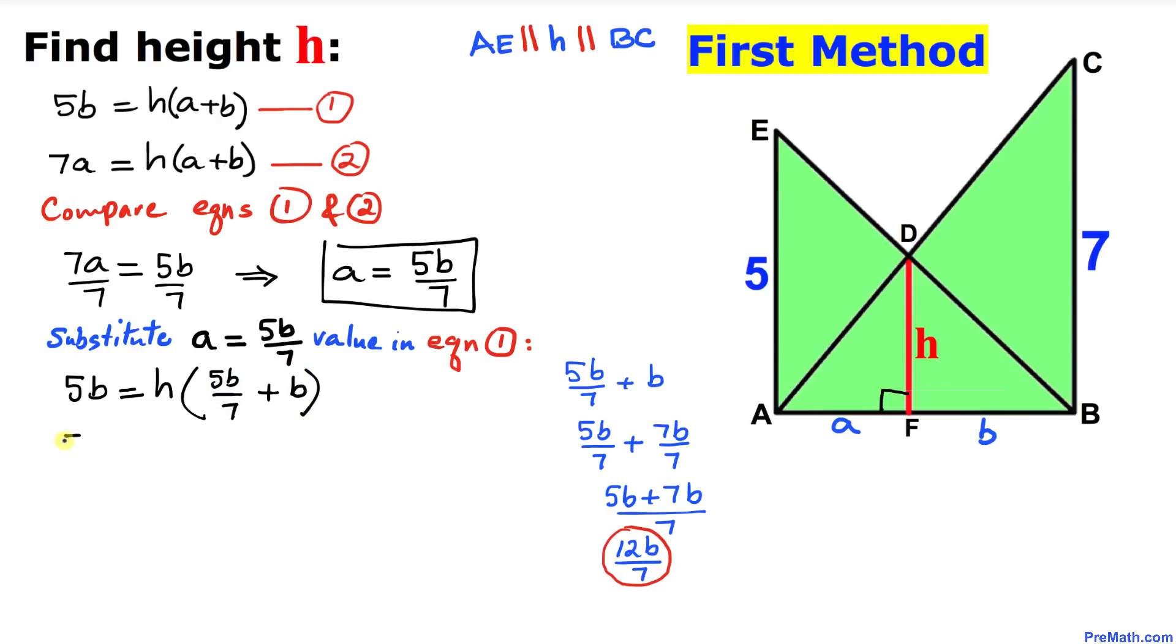Thus our equation becomes 5B equals H times 12B over 7. Now let's divide by B on both sides. That means we multiply by 1 over B on this side and 1 over B on this side. This B and B cancel, so we get 5 equals 12H over 7. Multiply by the reciprocal, 7 over 12 on both sides.